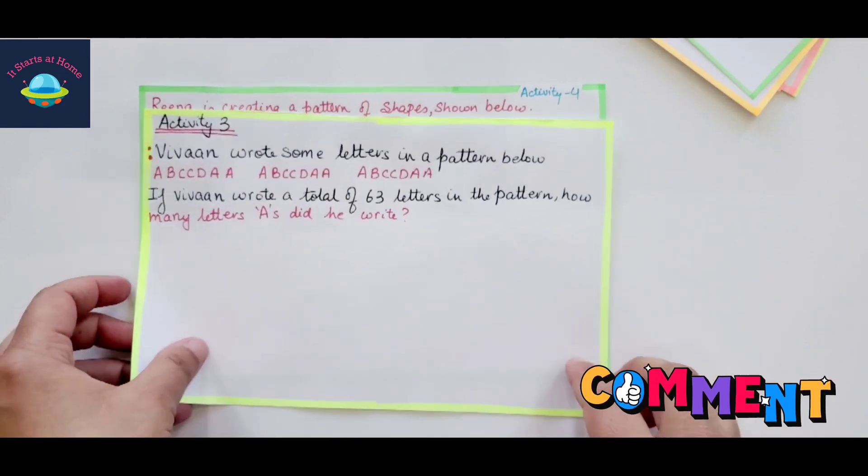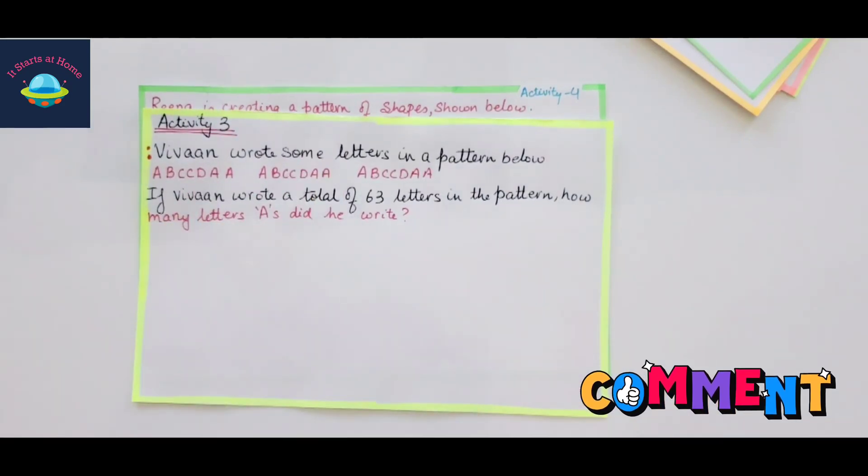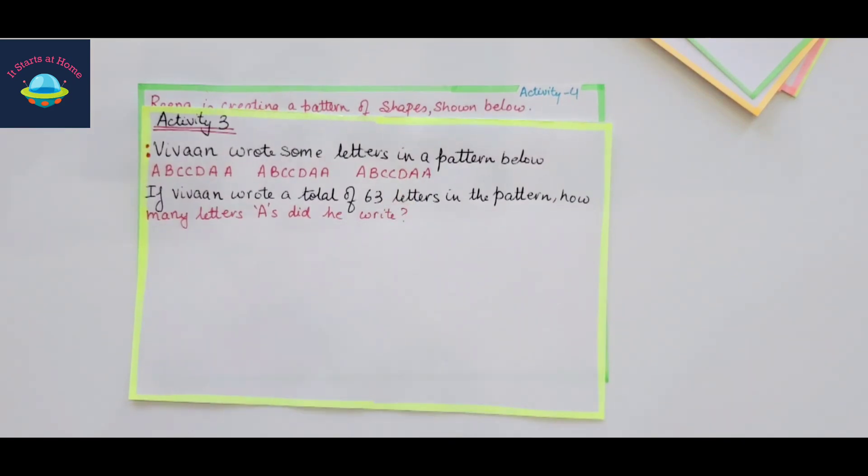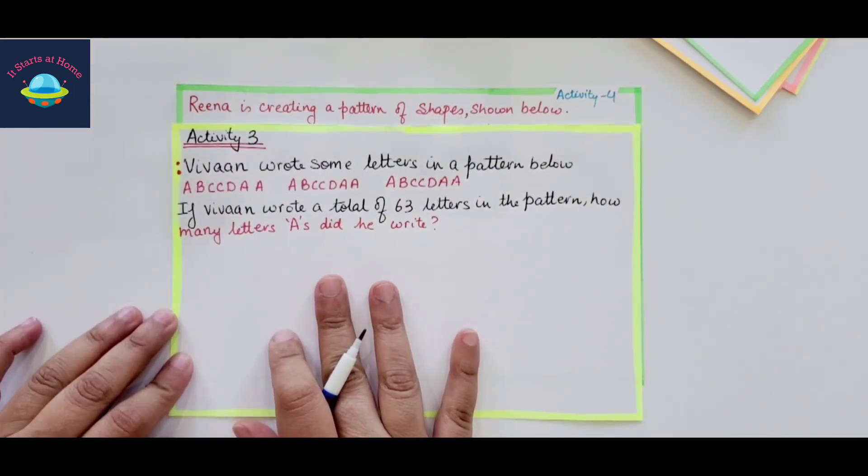Activity number three: Vivant wrote some letters in a pattern below A, B, C, C, D, A, A. Again, if Vivant wrote a total of 63 letters in a pattern, how many letters A did he write?